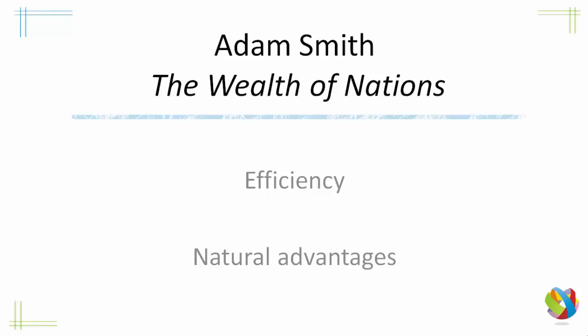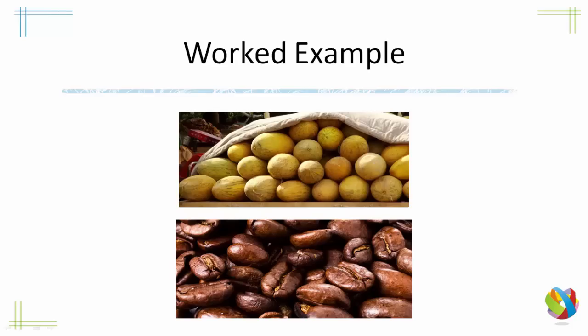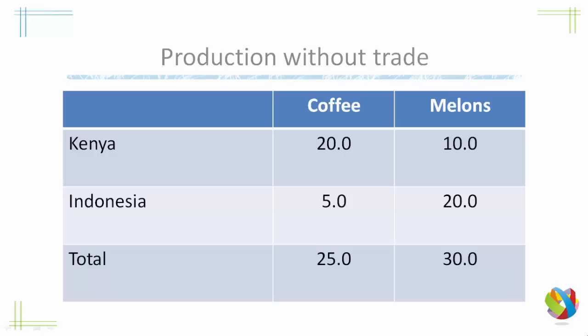Let's have a look at a worked example. We're going to be looking at melons and coffee in Indonesia and Kenya. Let's have a look at this table.